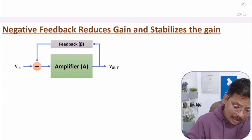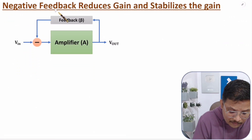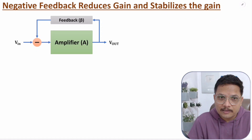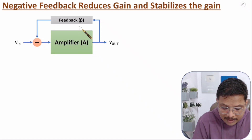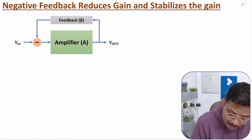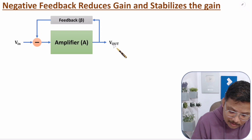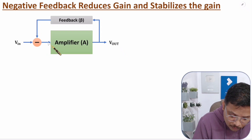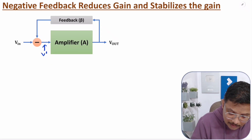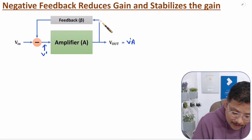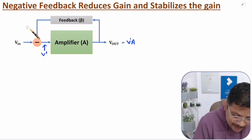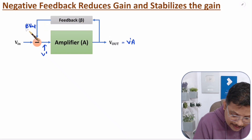Let me explain how we can have reduced gain with negative feedback and how it stabilizes the gain. I am considering one example of negative feedback where we have an amplifier with gain A and a feedback network with gain beta. What is my V_out? V_out comes based on the signal at the amplifier input — let's call it V_dash. So my output will be V_dash multiplied by gain A. Now this V_out is fed back with factor beta, so the output of the feedback network is beta times V_out.